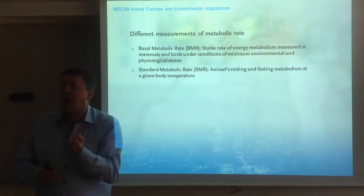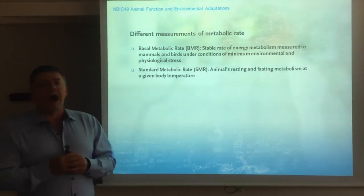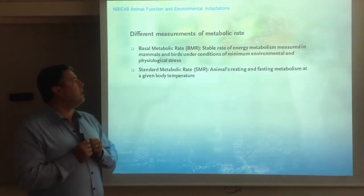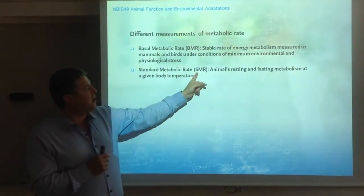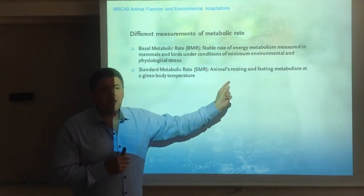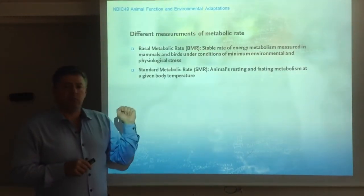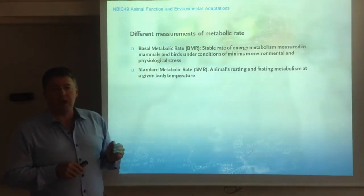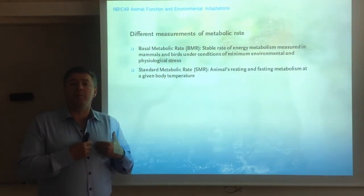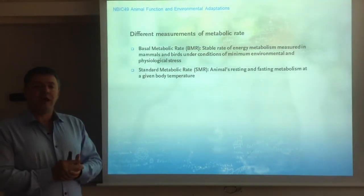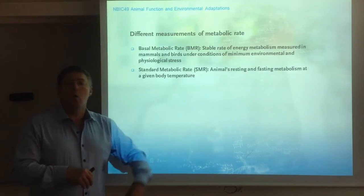Basal metabolic rate refers to the basic costs of life — the cost of maintaining the machinery of our body: our heart pumps, our brain thinks, our kidneys filter. In non-endotherm animals, we talk about the standard metabolic rate, abbreviated SMR, which refers to the animal's resting and fasting metabolism. Animals that are not digesting, not moving, not exercising, at a given body temperature. The difference between SMR and BMR is that for SMR we must define at which temperature it was obtained, because ectotherms allow their body temperature to fluctuate with environmental temperature. A fish at 5 degrees has a different metabolism than at 10 degrees, and we define SMR at each temperature respectively.